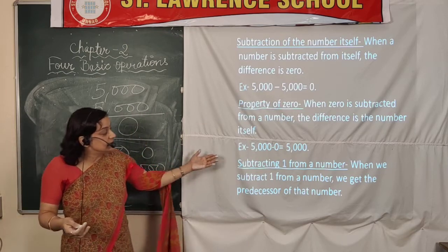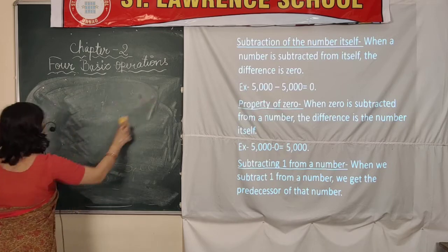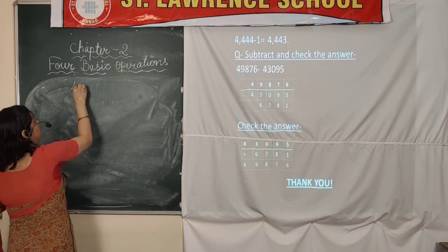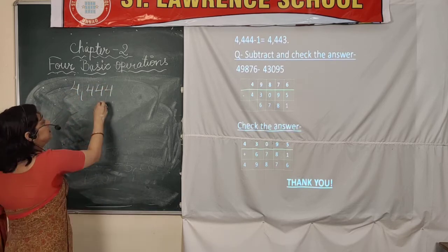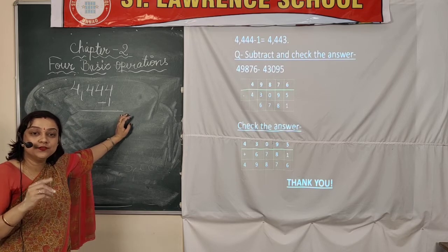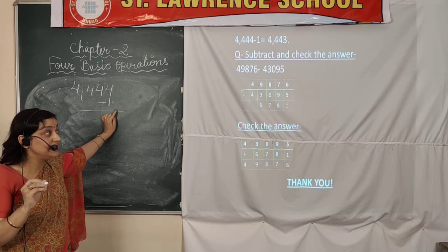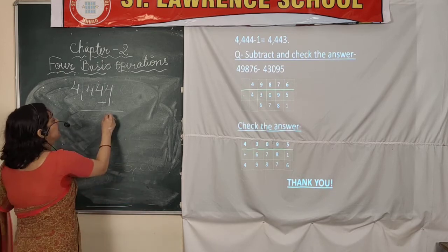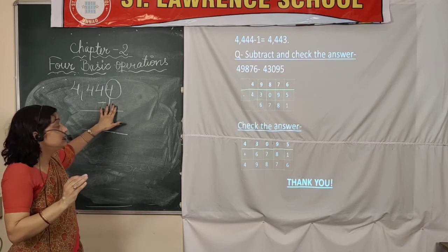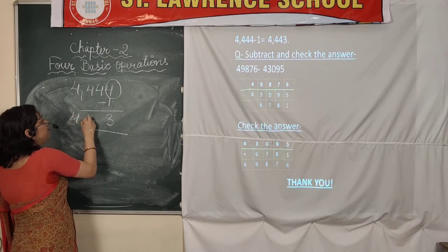The next property is subtracting 1 from a number. If you recall the addition property — adding 1 gives the successor of the number — then subtracting 1 gives the predecessor of the number, meaning the previous consecutive number. For example, taking 4,444 and subtracting 1: each 4 becomes 3 in the ones place, giving us the predecessor. So our answer is 4,443. The predecessor is the number smaller than the original, and 3 is the previous consecutive number of 4.